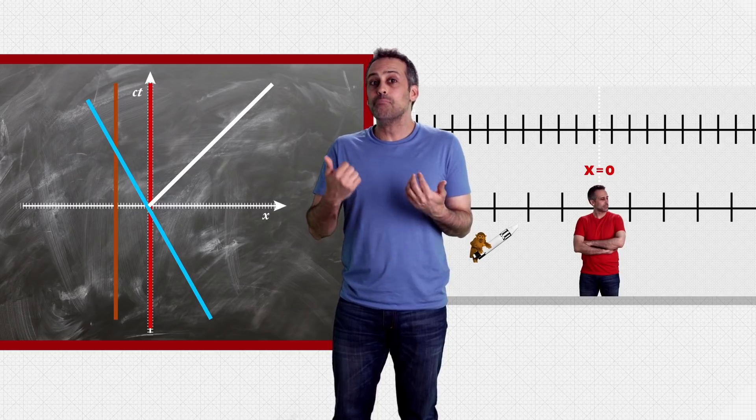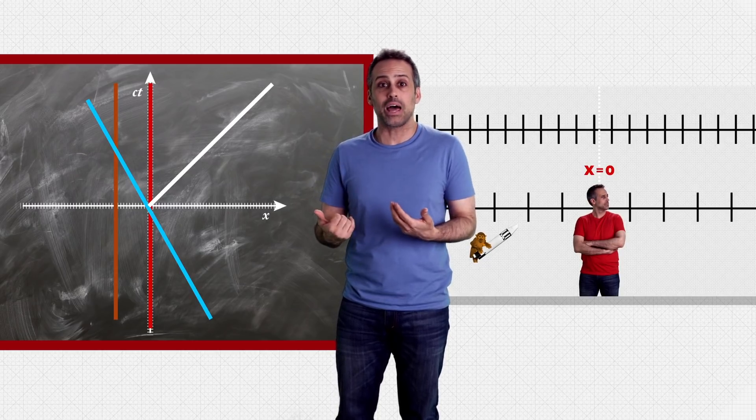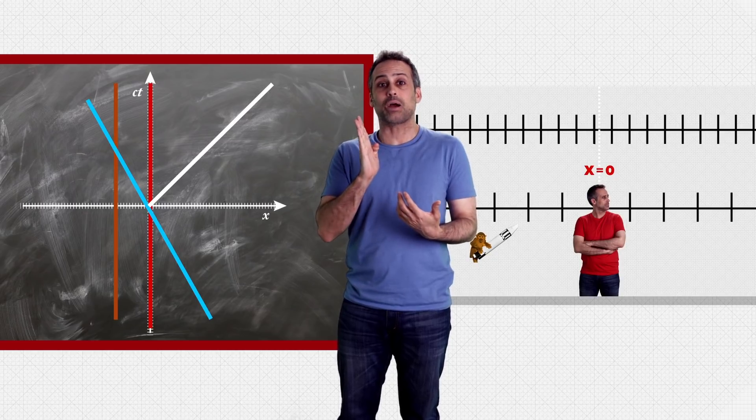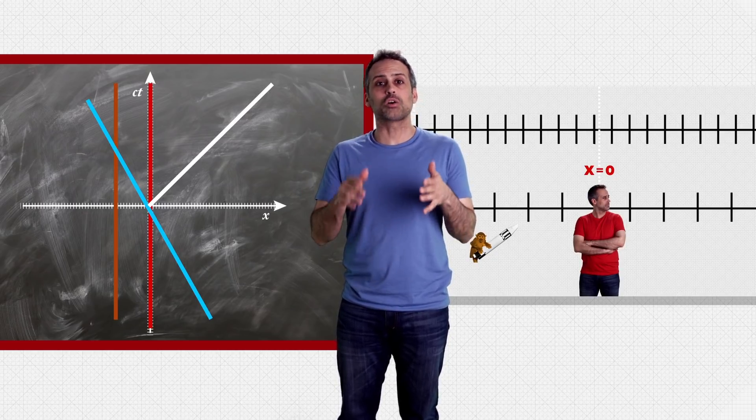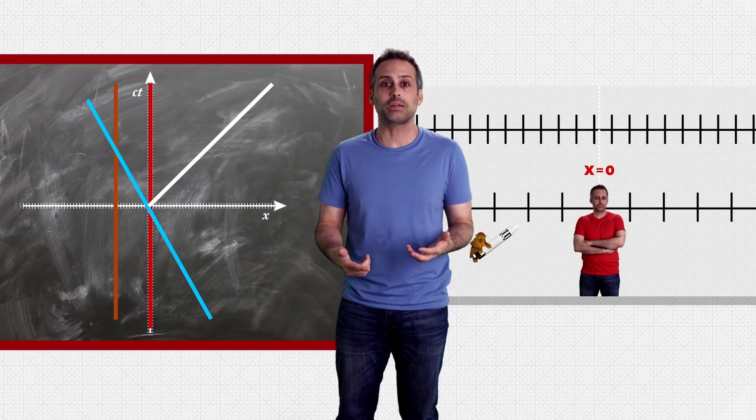But red guy says that I'm moving, not stationary. I'm moving to the left. So my world line isn't vertical. It points slightly backward. Instead, red guy's world line and the monkey's world line are vertical in his diagram, since they're both stationary from this perspective.